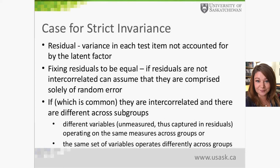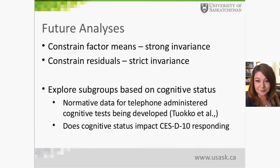Some have argued that strict invariance is unduly challenging to meet, but after reading more on the subject, I would like to make a case for strict and strong invariance with the CES-D. We've thus far made a case for weak invariance, and some would argue that is enough. But if you're trying to make inferences about certain groups included in subsequent analyses, it is much stronger to demonstrate that the same latent variables are being measured in the same way, without systematic missing variables or error.